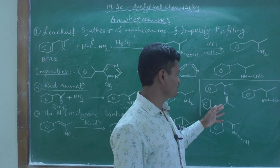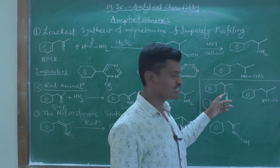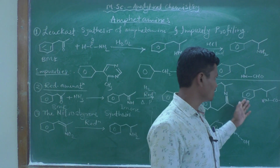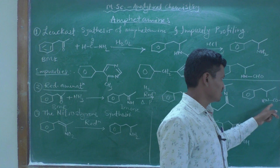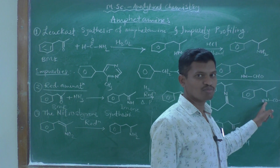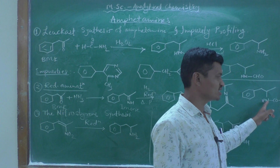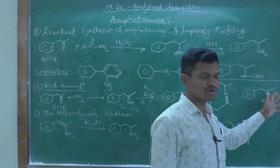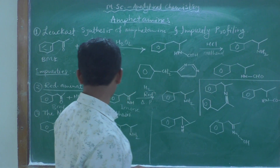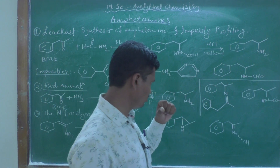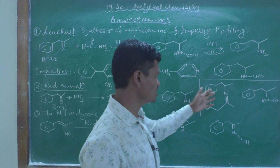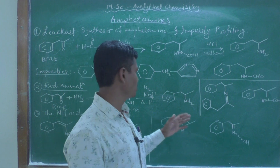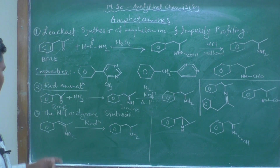Since the method is different from the Leuckart synthesis, the impurities produced are also different. In this reductive amination, one impurity is a dimer-type structure, and another is N-acetyl amphetamine — where an acetyl group is present on the nitrogen of amphetamine. These are the two most important impurities formed in the reductive amination reaction.